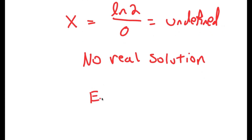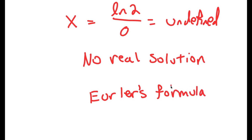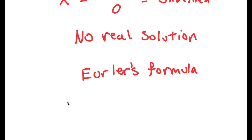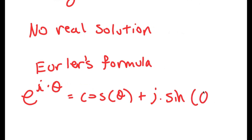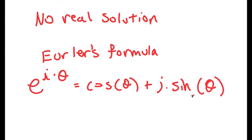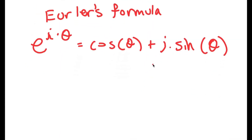To actually solve this, I'm going to use something known as Euler's formula. Basically, what this formula is: if I have something in the form e to the power of i times theta, this is equal to cosine of theta plus i times sine of theta. And I know to many of you watching this video, this may just sound like a bunch of gibberish, but just hang on.